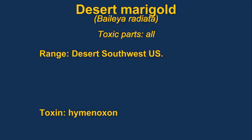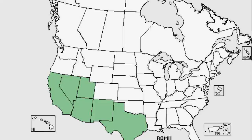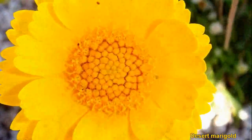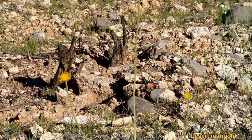Desert marigolds are native to the southwestern United States and Mexico. They are often used as ornamentals. The main toxin is hymenoxon.